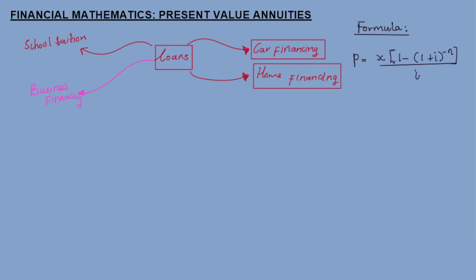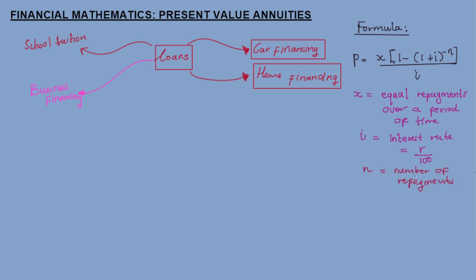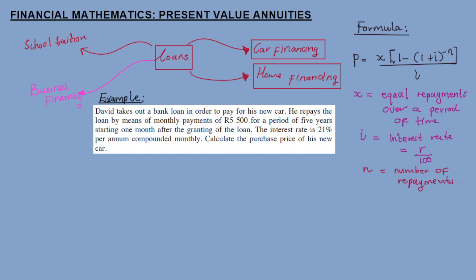To calculate your loans we use the present value annuity formula. In the present value annuity formula, x stands for the equal repayments made over a period of time, i is the interest rate calculated as a percentage, and n is the number of repayments.